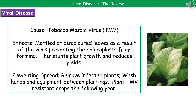When we've got fewer chloroplasts, the plant is going to be able to trap less of that sunlight energy, therefore will carry out less photosynthesis. So we also see stunted plant growth and reduced yields. In order to prevent the spread of TMV, we need to remove the infected plants and wash hands and equipment between plantings to prevent it spreading from one to another.